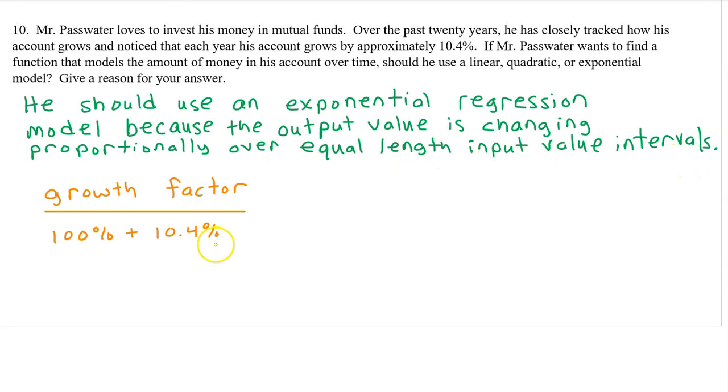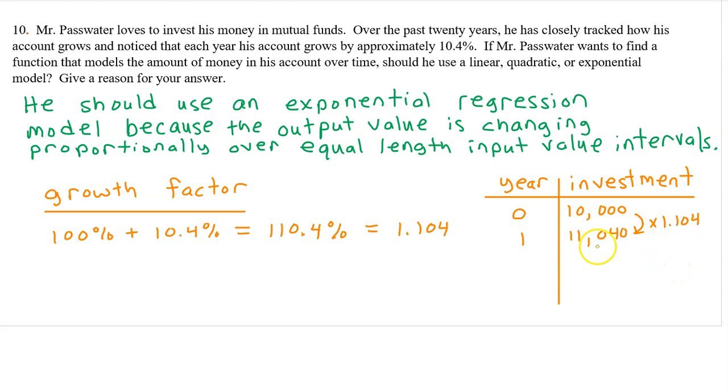Just to expand on that, the growth factor here is 100% plus the 10.4%. So the growth factor is 110.4%. As a decimal, that's a growth factor of 1.104. That means if Mr. Passwater made an initial investment of $10,000, to find out how much he would have after one year, you would multiply by 1.104. That's $11,040.